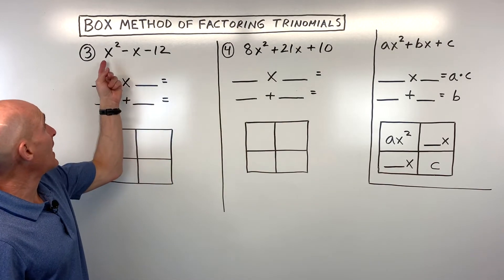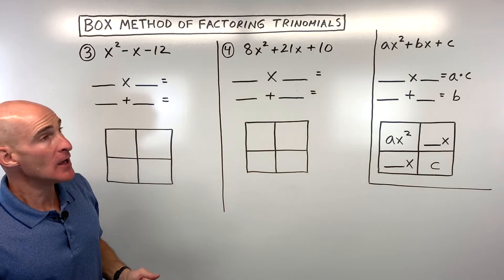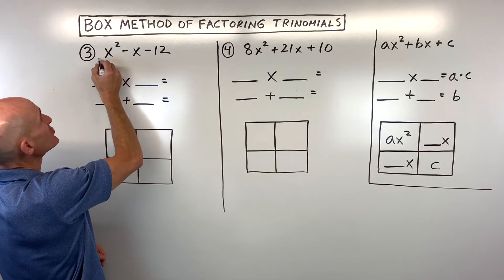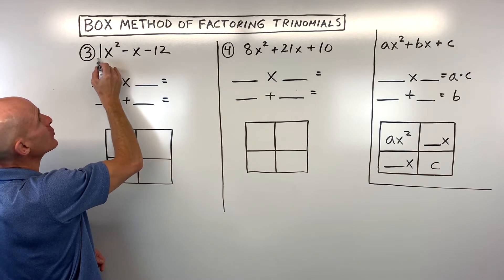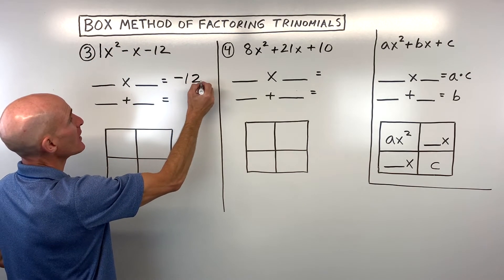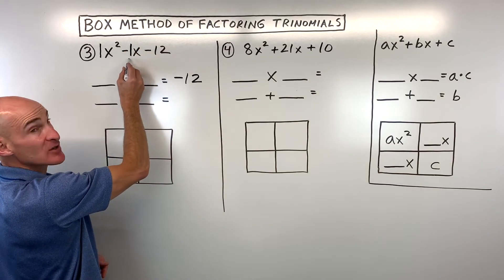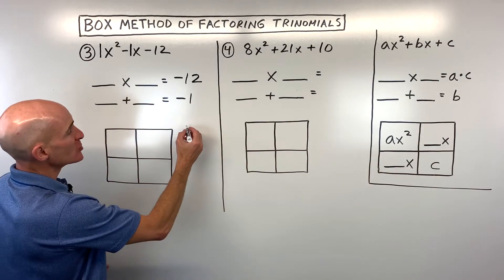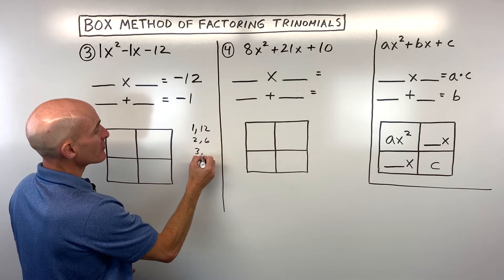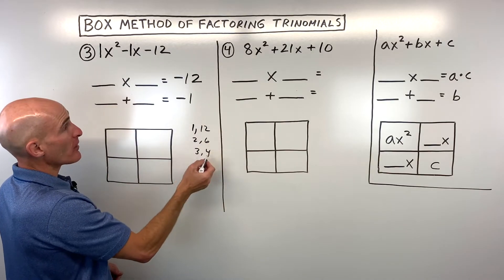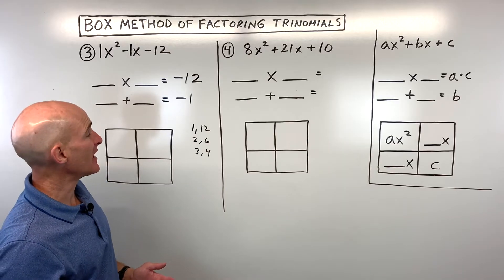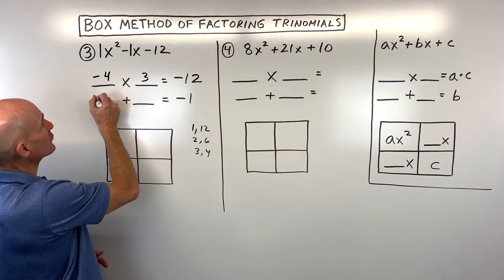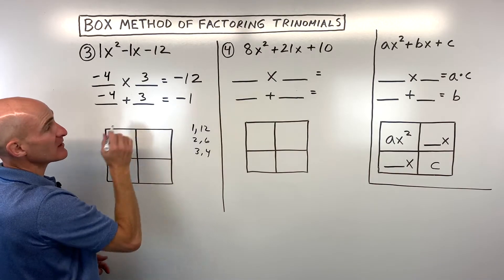Let's look at number 3: x squared minus x minus 12. Using A times C — notice there's no coefficient in front of x squared, so it's understood to be 1. So 1 times negative 12. And since there's no coefficient on the middle term, that's a negative 1, so we need two numbers that add to negative 1. Let's make a list: 1 and 12, 2 and 6, 3 and 4 — all multiply to 12. To get negative, one number has to be positive and one negative — so negative 4 and positive 3. That multiplies to negative 12 and negative 4 plus 3 equals negative 1.